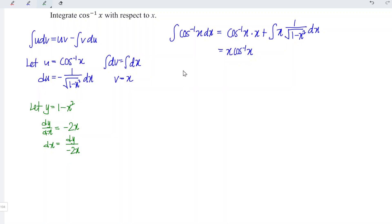Let's substitute. So we should add, integrate x times 1 over square root of, since 1 minus x square is equal to y, so we can write it here y. And dx is equal to dy over minus 2x.